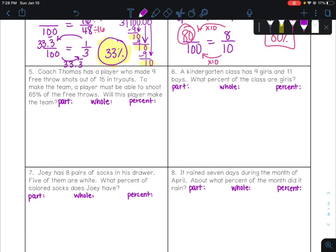For number five, Coach Thomas has a player who made 9 free throw shots out of 15 in tryouts. To make the team, a player must be able to shoot 65% of the free throws. Will this player make the team? So notice here that they seem to give us three numbers, but you have to double-check something about this percent. It's not saying that this player made 65% of the shots. It's saying that we have to compare whatever percent this player made to that 65% to see if they made the team. So we don't actually know our percent, but we know that we want to compare it to 65.